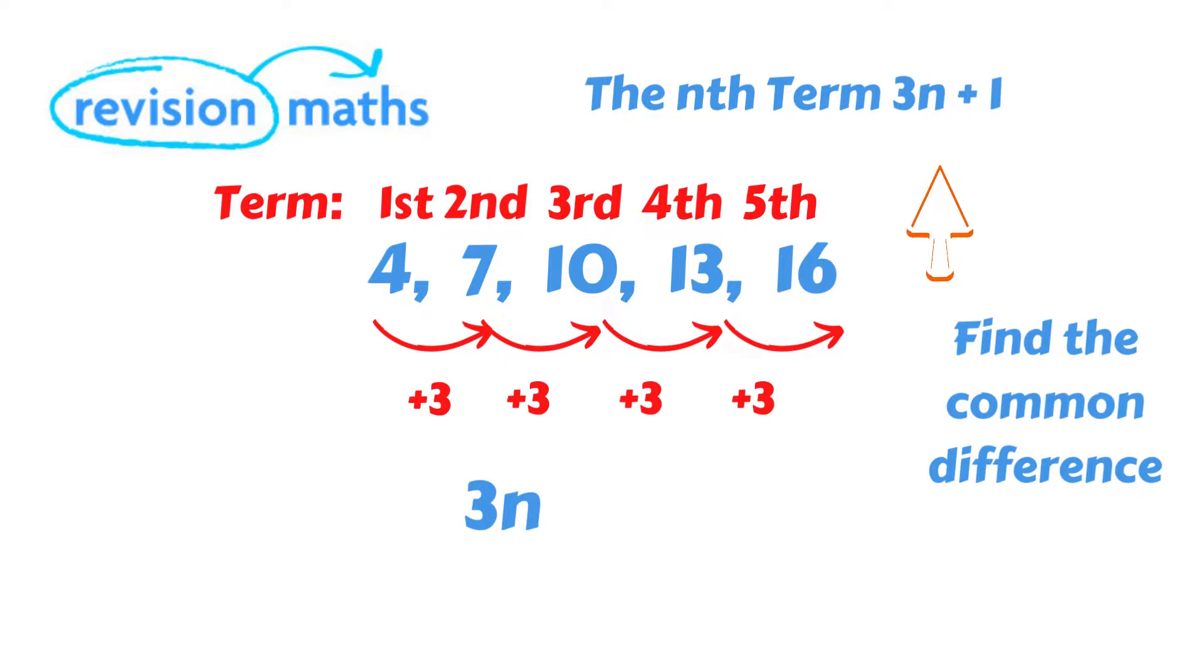So to find out what's being added or subtracted, we need to find the previous term to the first number in the sequence. The first number of this sequence is 4. So we subtract 3 from this to give us plus 1. We then include this term in our expression. So we now have the expression 3n plus 1.